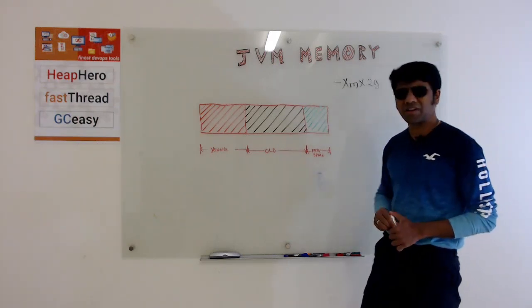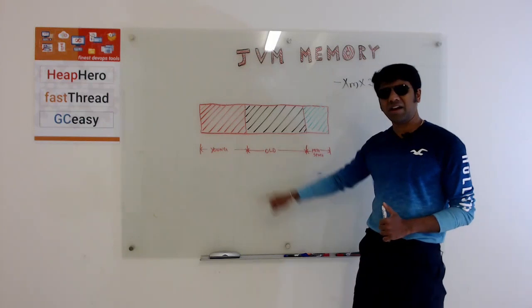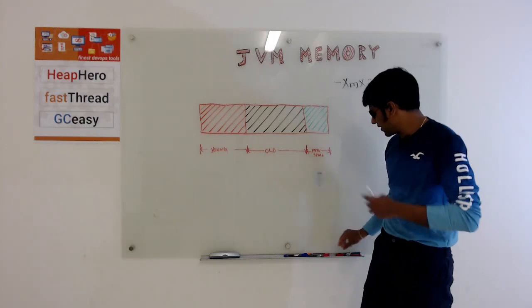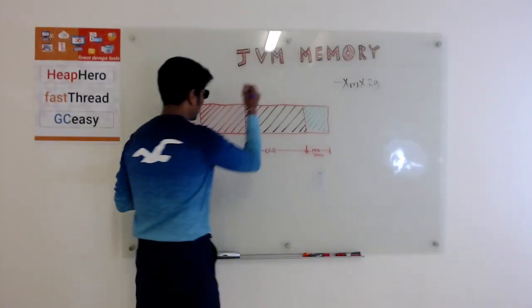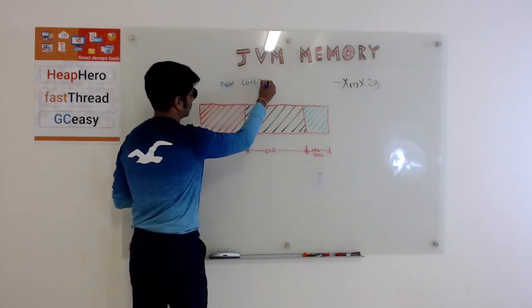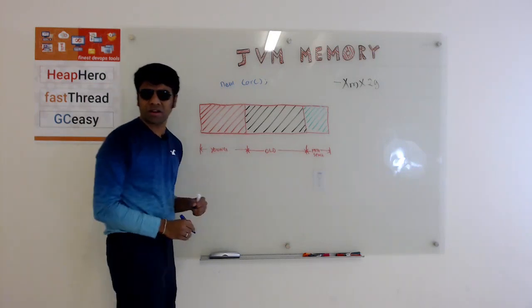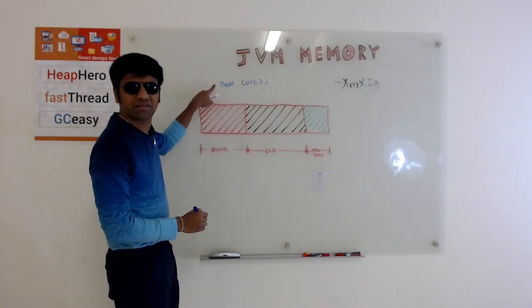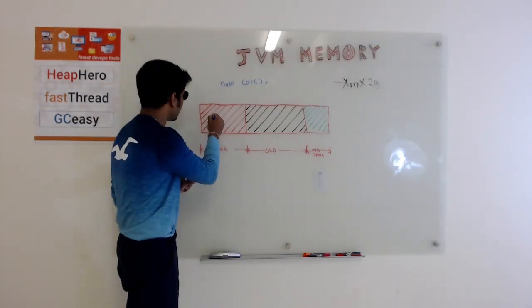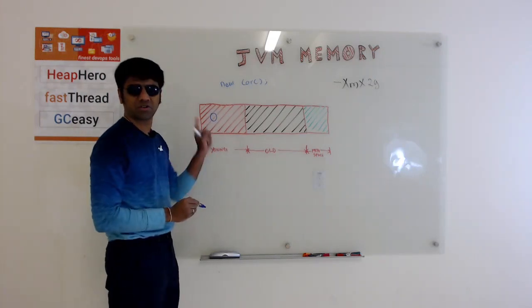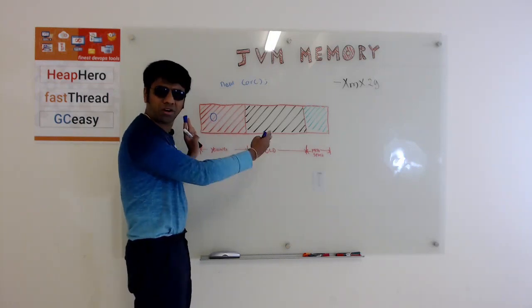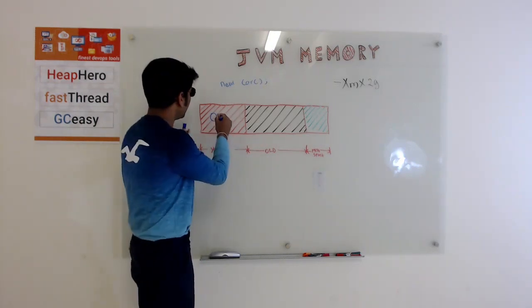When you take Java heap, it basically has two regions: young generation and old generation. Whenever someone writes code something like 'new Car', this will create an object. This car object is initially created in the young generation, and if this object is going to live for a long period, if it's going to be long-lived, then this object gets promoted from the young generation to the old generation.